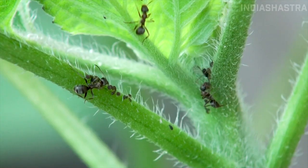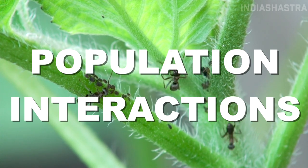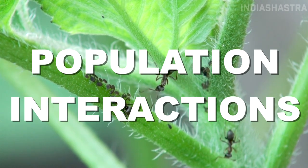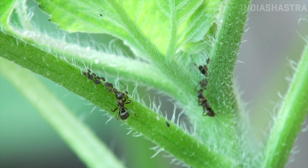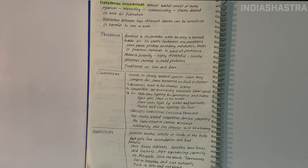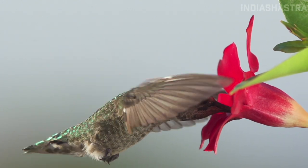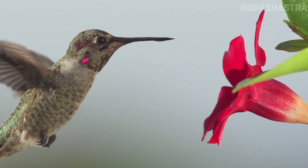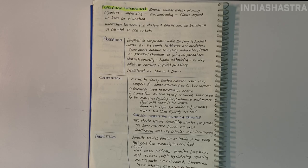Now let us discuss population interactions. There is no habitat on Earth inhabited by just a single species. Even a plant cannot survive alone — it needs soil microbes to break down organic matter and return inorganic nutrients, and it needs animal agents for pollination. Inter-specific interactions arise from the interaction of populations of two different species, and could be beneficial, detrimental, or neutral to each other.